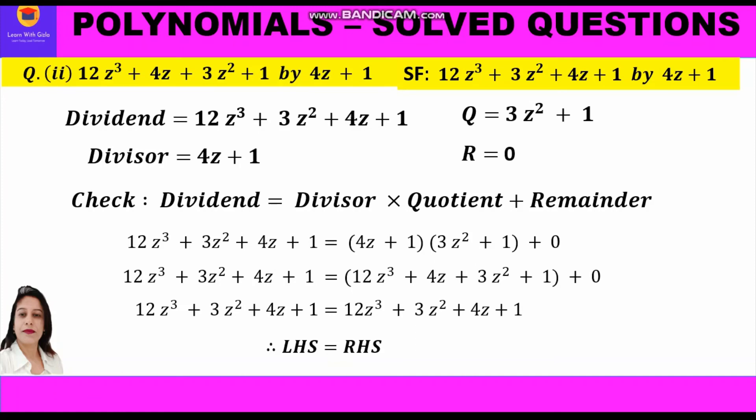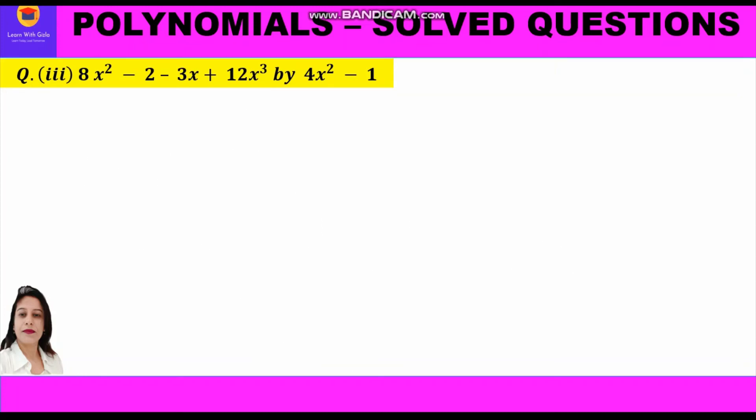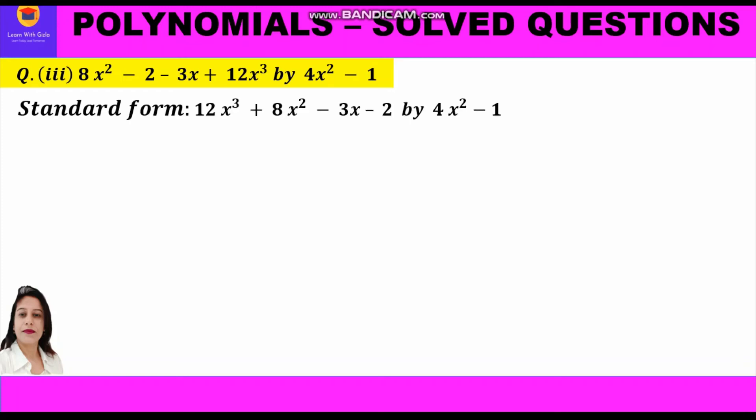Now let's move to the third question. It is given: divide 8x² minus 2 minus 3x plus 12x³ by 4x² minus 1. The dividend is not in standard form, so we shall write it in decreasing order of the powers.